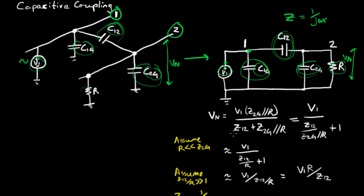We can simplify this expression by assuming that the resistance R is going to be much less than the impedance of this node here, and that's going to generally be true. R is going to be on the order of 50 ohms or a few kilo ohms or a few mega ohms, and this is generally going to be larger. If you assume that, this resistance dominates this parallel network here, and we can rewrite the expression as V1 over Z sub 12 over R plus 1.